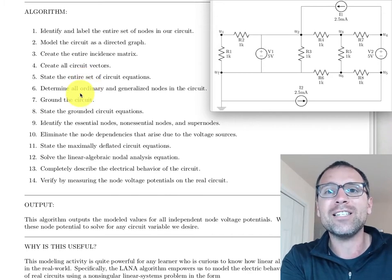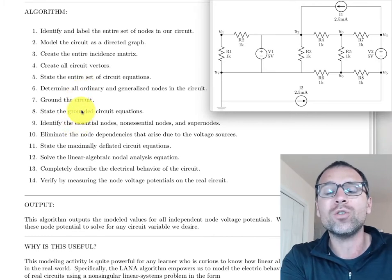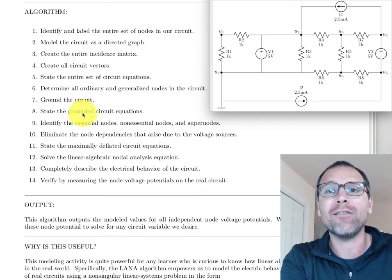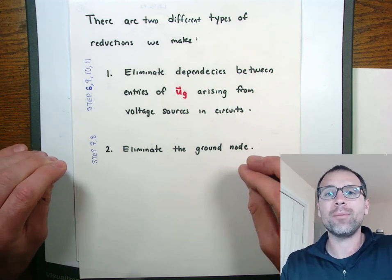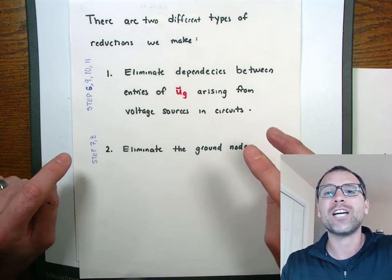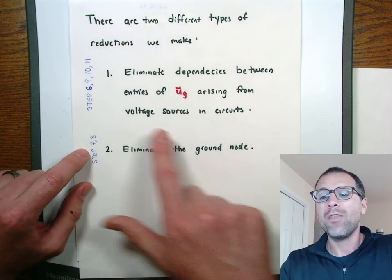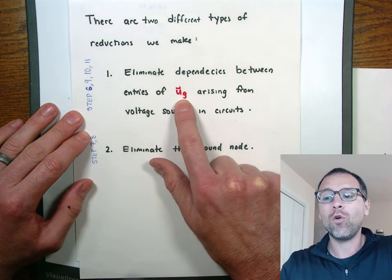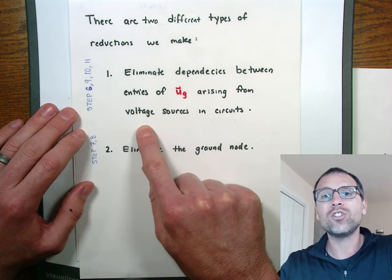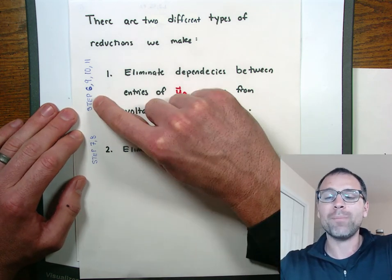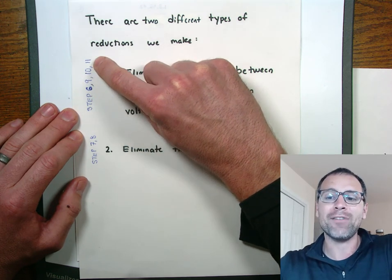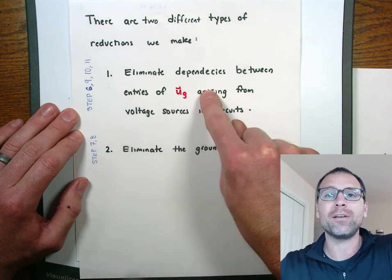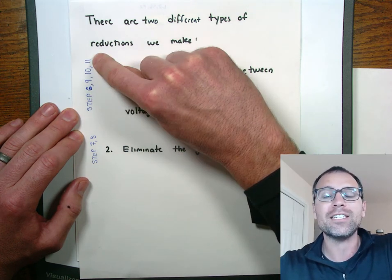In step six we've now identified generalized and ordinary nodes, and from this point forward we're going to reduce the number of unknowns from step four and the number of equations from step five. There are two different types of reductions. The first type has to do with eliminating dependencies between the entries of our node voltage potential vector u_g that arise due to the voltage sources. That shows up in steps six, nine, ten, and eleven — step six sets the foundation for this type of elimination.